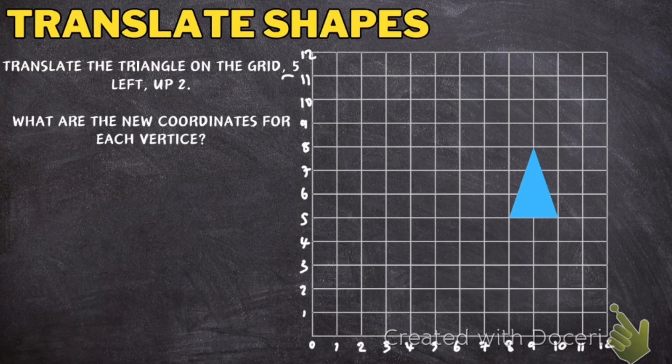So I'm going to start by moving it left 5. So I'm going to pick this corner here. I'm going to go left 5, 1, 2, 3, 4, 5.